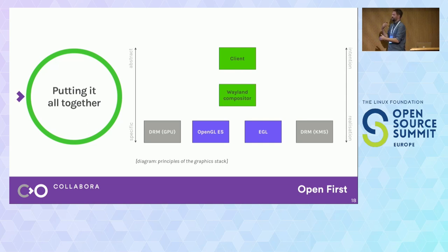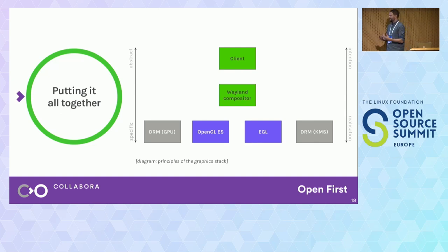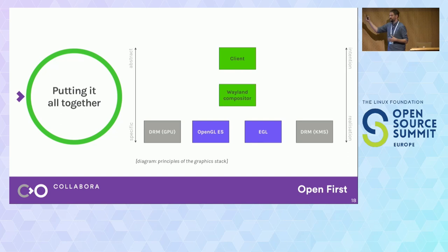As you climb up the stack, you get much more hardware-independent and abstract. Wayland compositors like Mutter and Weston have no hardware-specific code — they run everywhere. But they're the first layer at which you start to apply policy and arbitrary choices about what makes a good desktop. It's the first real layer at which we're translating from a high-level declaration of intention down to a very specific, low-level realization of that intention. And by the time you get up into client land, it's 'I'd like a button and to download stuff off the internet.'